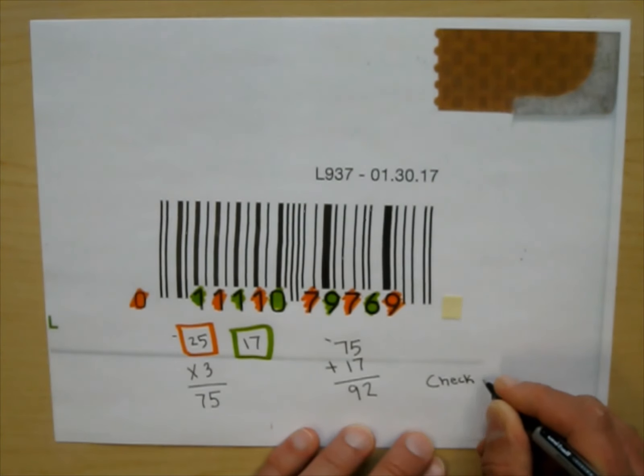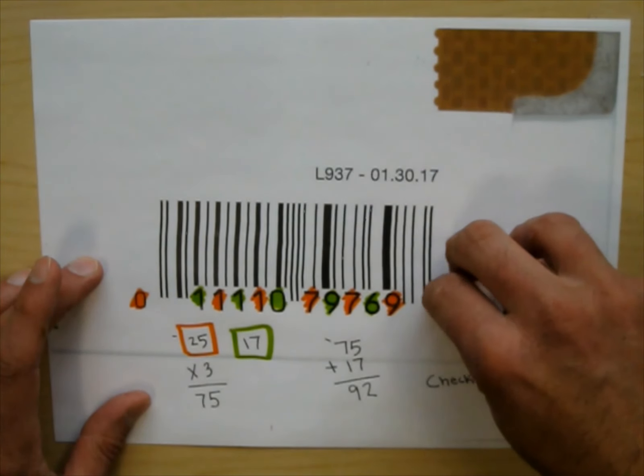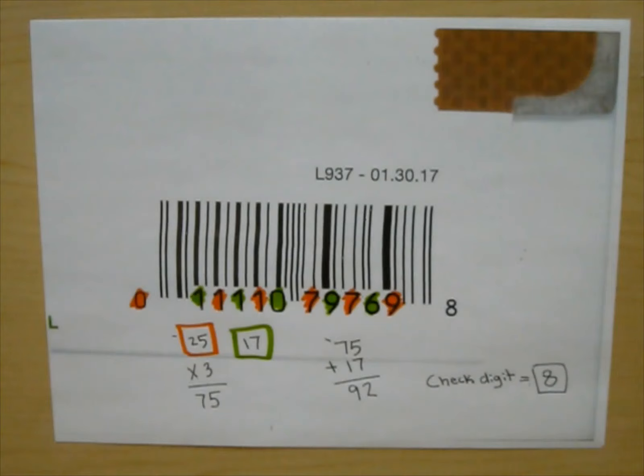So the check digit on this example should be the number that brings me to the next multiple of ten. The next multiple of ten is one hundred. So the check digit should be eight. So let's see if it is. And there it is. Beautiful.